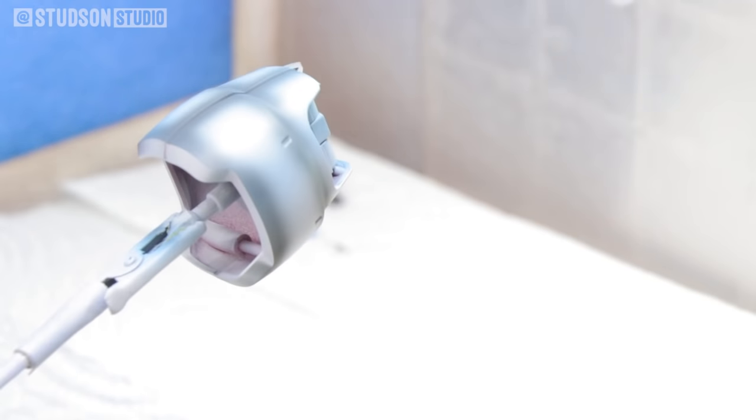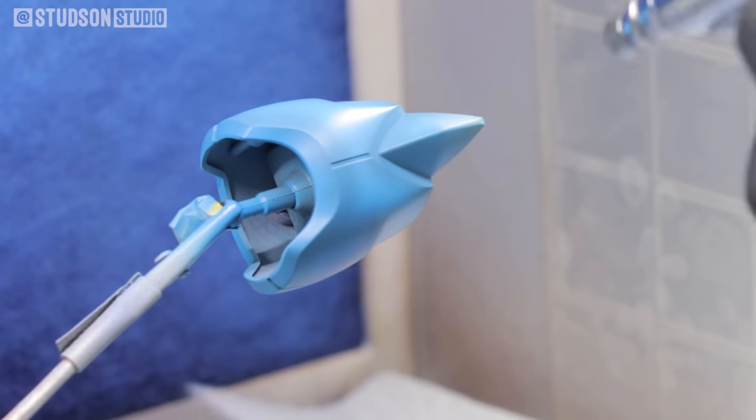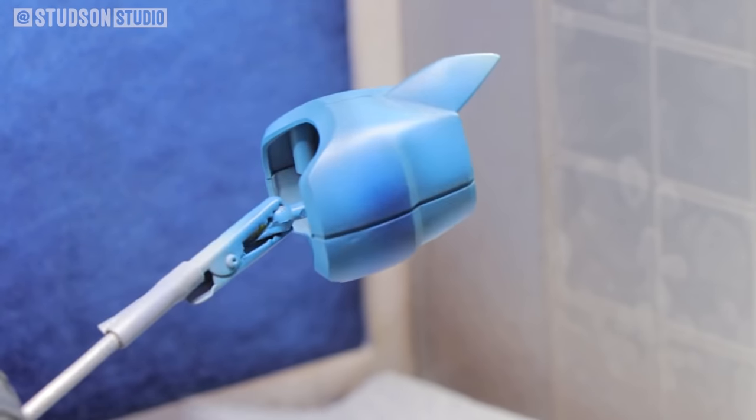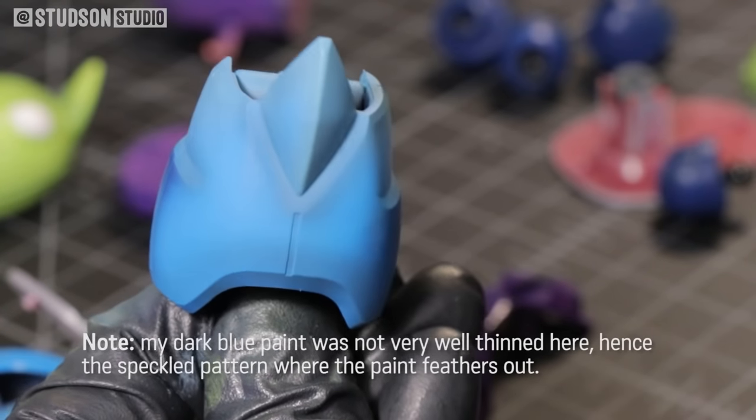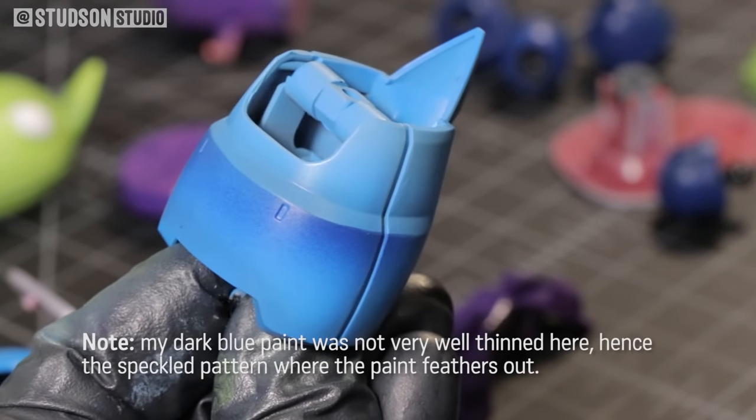For example, as I start to lay down some of this blue, you can still kind of see the dark shading areas that are left behind underneath. It's a pretty subtle effect, but I think it makes a big difference. I also added some dark blue here around the midline for some added contrast.